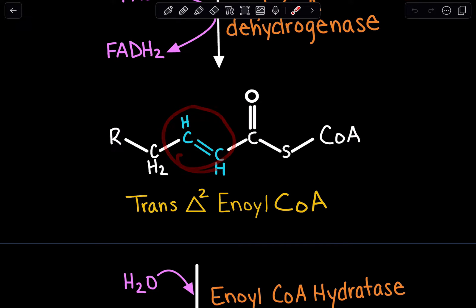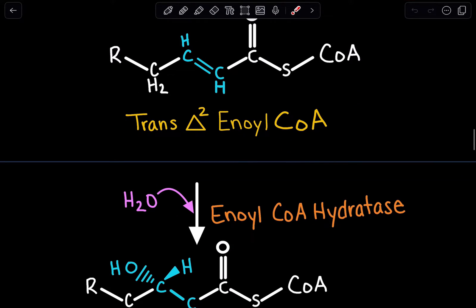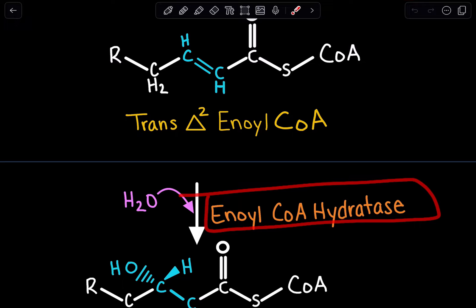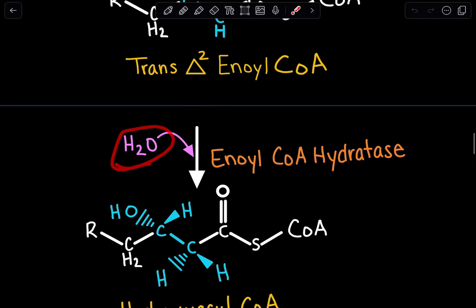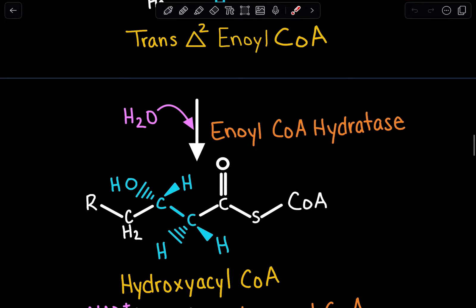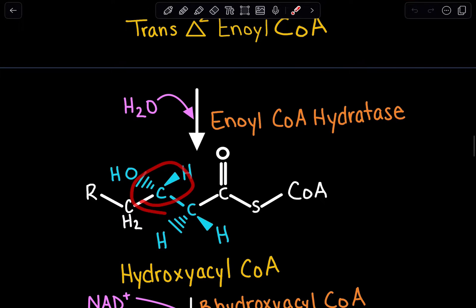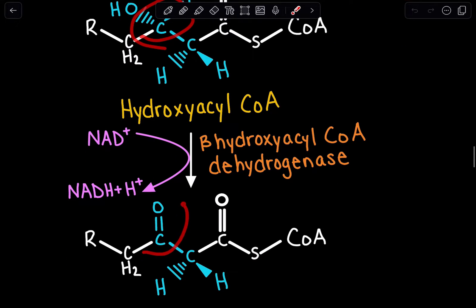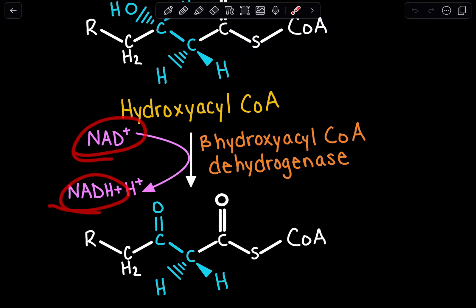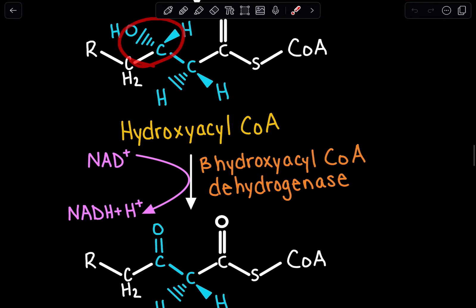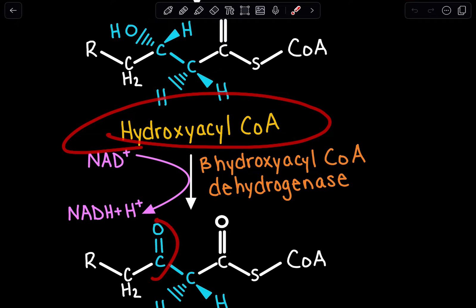Creating that double bond is really important because in the next step we are going to hydrate it. We hydrate through a hydratase enzyme called enoyl-CoA hydratase. This hydration step introduces a hydroxyl group on the beta-carbon. Now that we've introduced that hydroxyl, we can oxidize it to give us a carbonyl. This step is catalyzed by a dehydrogenase enzyme because we are going from NAD to NADH — we are reducing NAD and oxidizing hydroxyacyl-CoA to get that carbonyl.